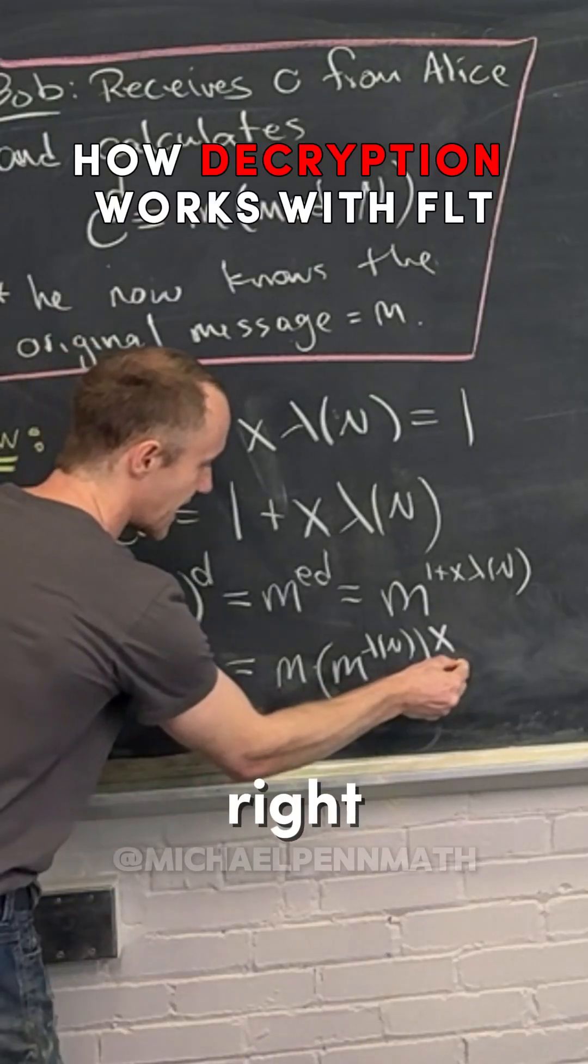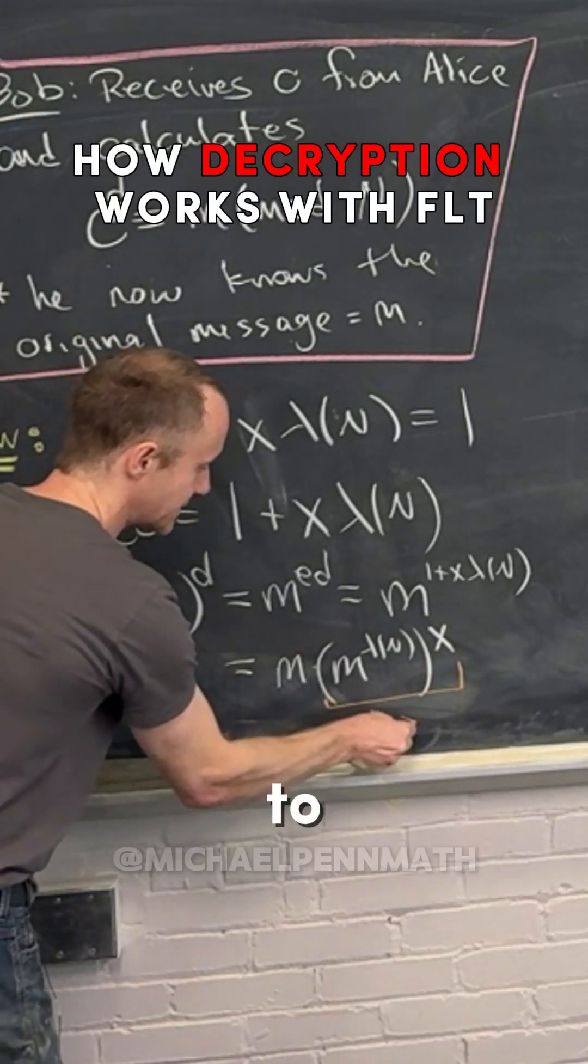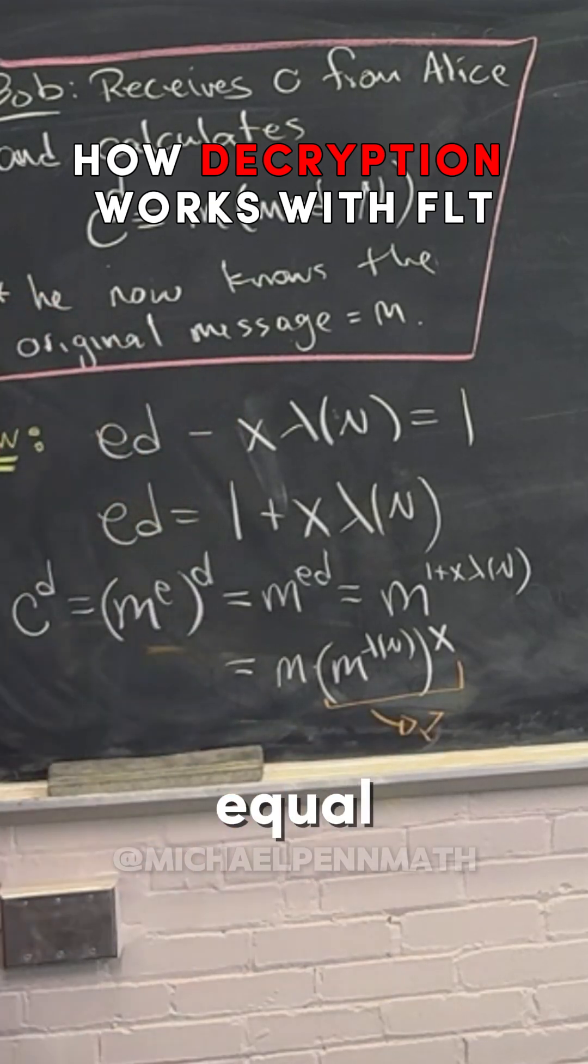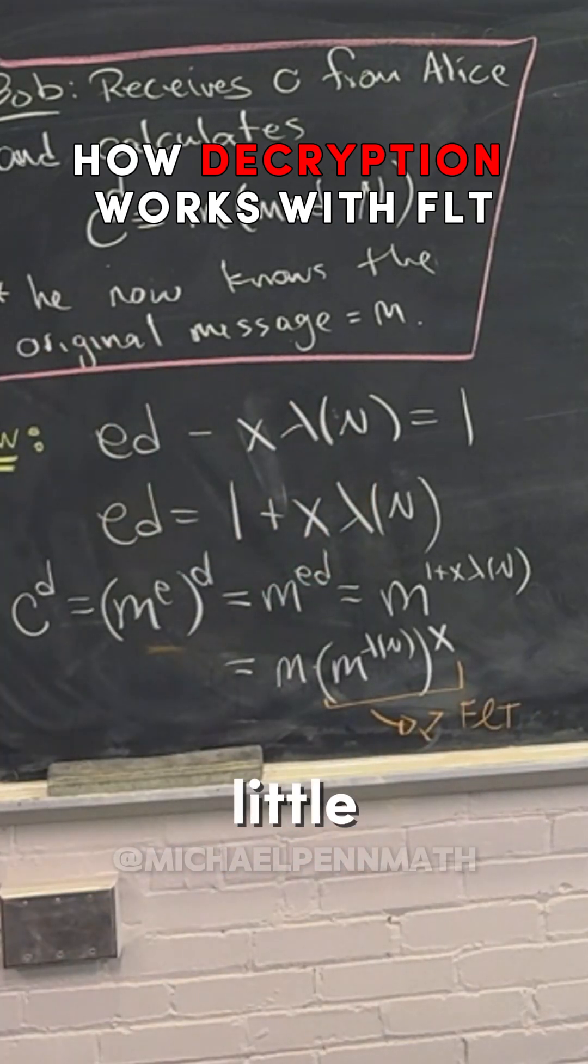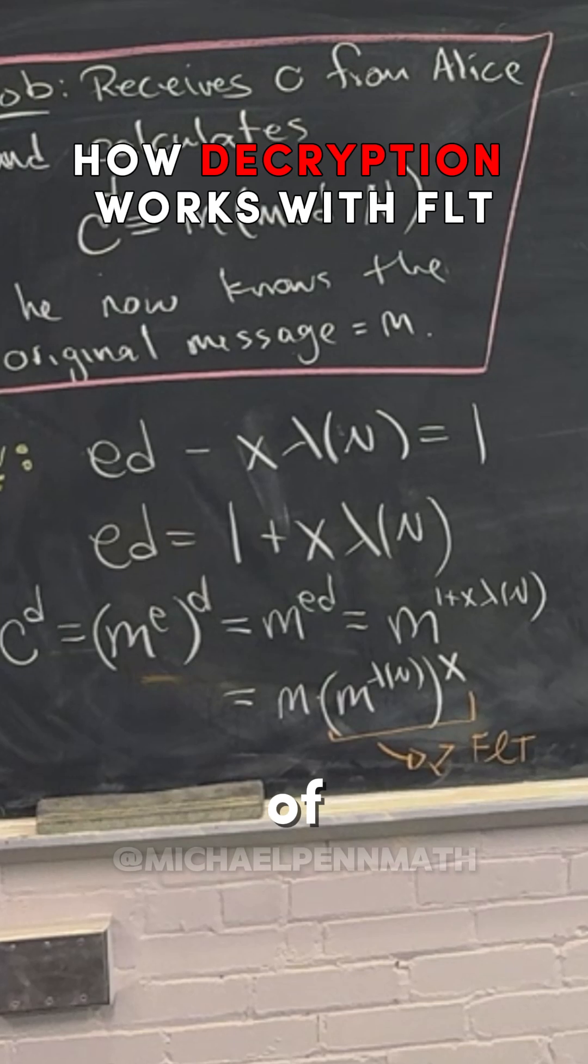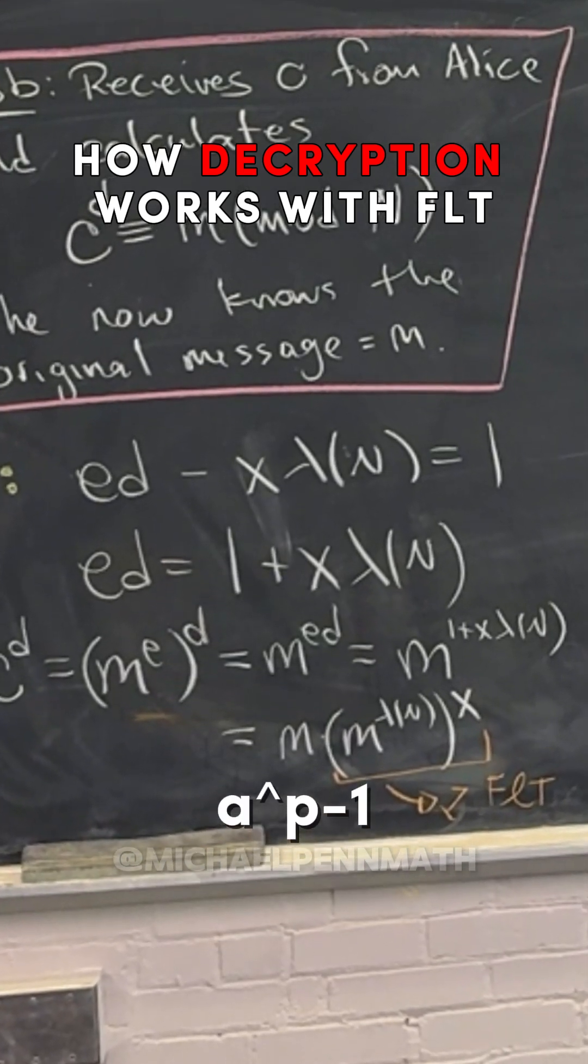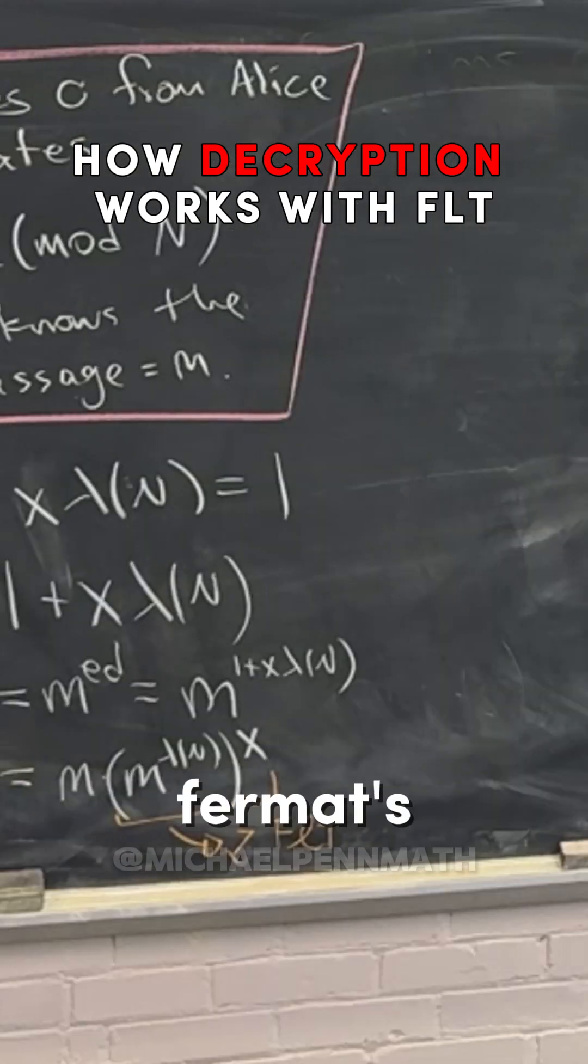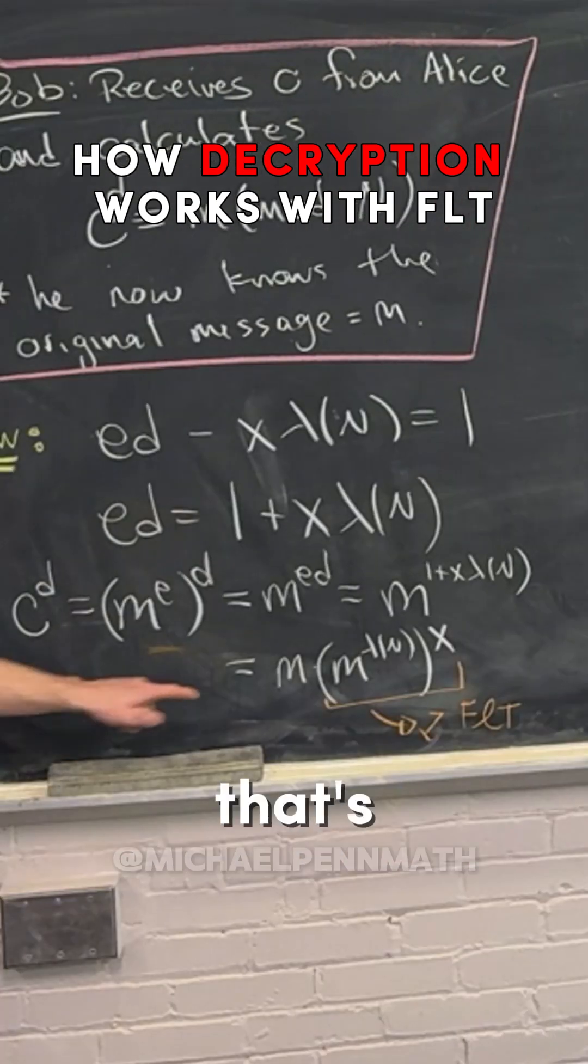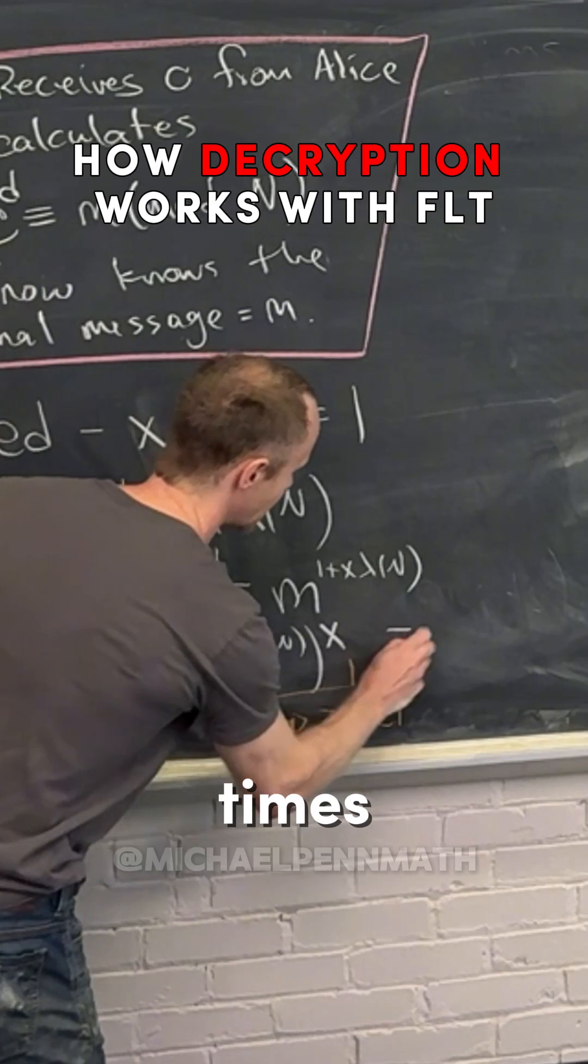But then this thing right here, this m to the lambda n is actually equal to one. And that's equal to one not by Fermat's little theorem, but by something really related to Fermat's little theorem. So that m to the lambda of n, you can think of that as like a to the p minus one, that gives you one because of Fermat's little theorem essentially. But if that's one and this is m, then m times one is m.